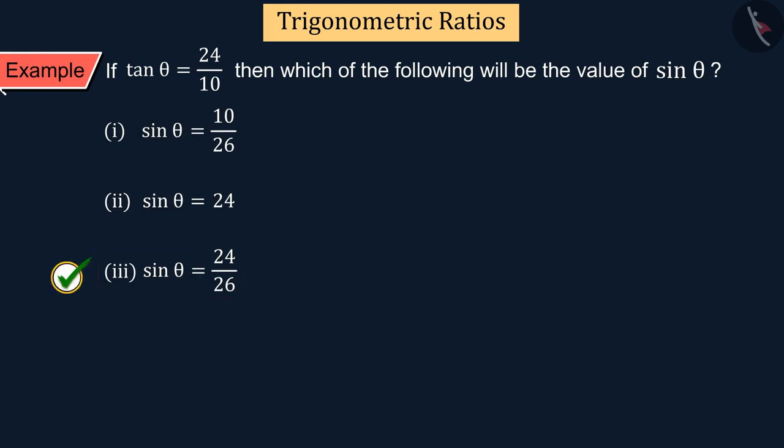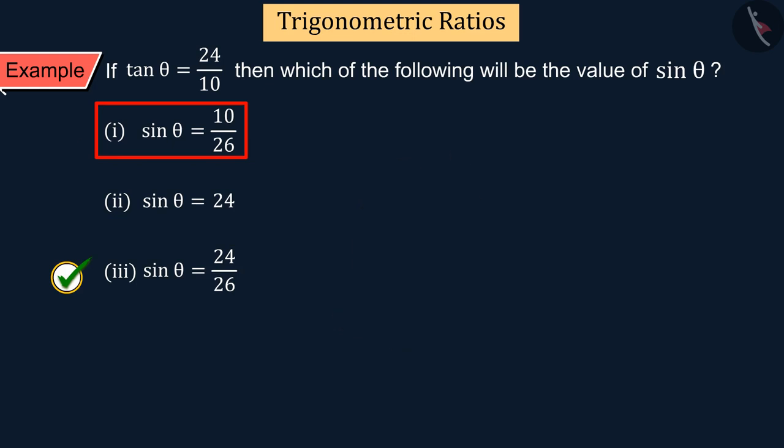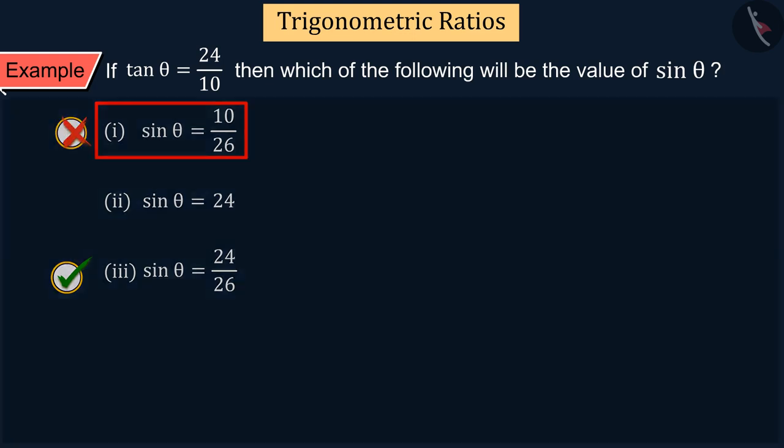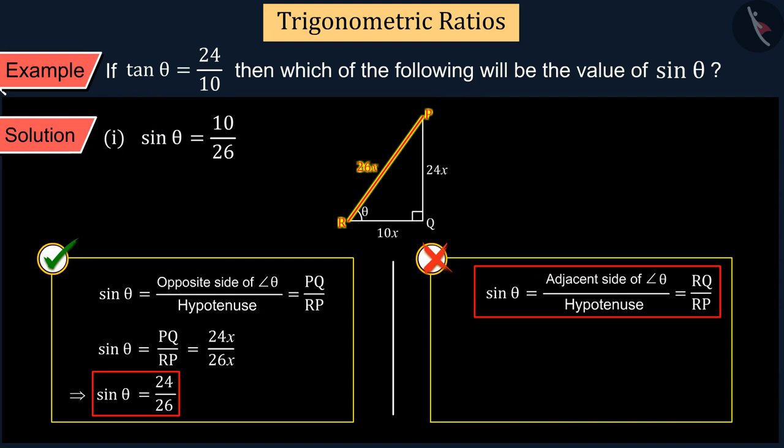If you chose option 1, it is a good try but this is the wrong answer. From the beginning of the solution till you calculated the hypotenuse you did the process correctly, but to calculate sin θ you used adjacent side instead of the opposite side, which caused your answer to be incorrect.